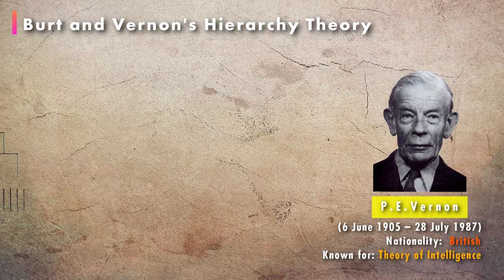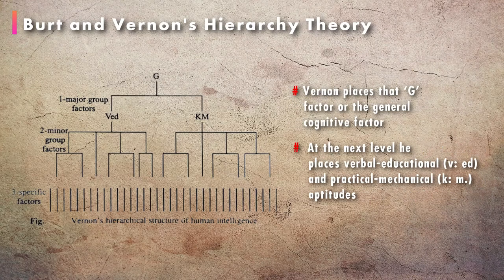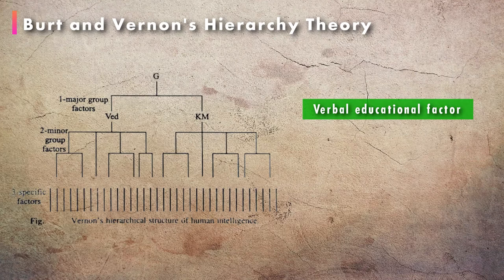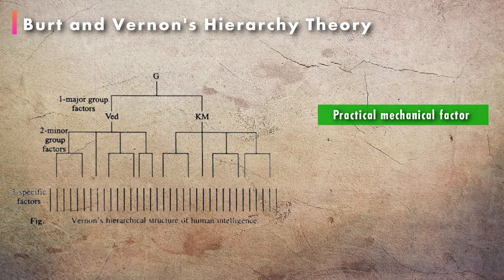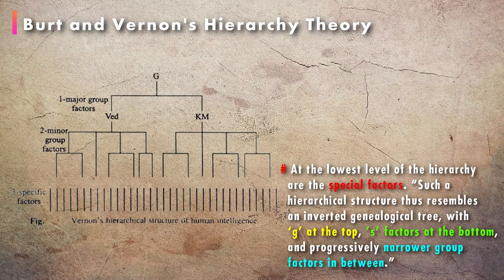This diagram shows Vernon's structure of mental abilities. At the top of the hierarchy, Vernon places the g-factor, or the general cognitive factor. At the next level, he places two broad groups of factors corresponding to verbal-educational and practical-mechanical aptitudes. These major factors may be further subdivided: the verbal-educational factor into verbal and numerical sub-factors, and the practical-mechanical factor into mechanical information, spatial, and psychomotor ability.